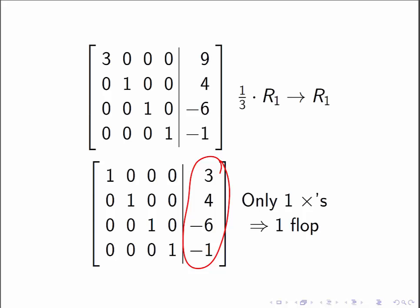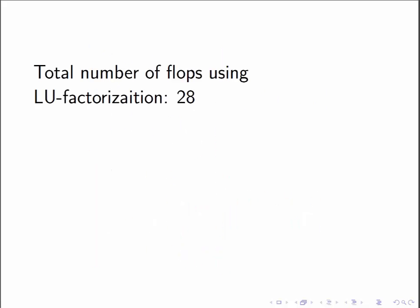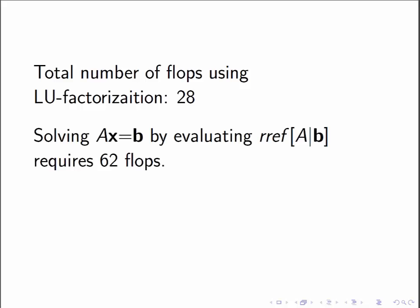Again, that seemed like a lot of work, but why we did this is because I did a grand total of 28 floating point operations. As we keep track as we're going along, I did 28 floating point operations. If you tried to solve Ax equal to b by putting A and attaching b and putting it into reduced row echelon form, that would take 62 floating point operations. So if I can get it into an LU factorization, it only requires 45% of the floating point operations in order to solve that system of equations.